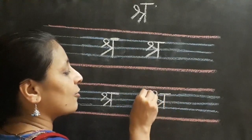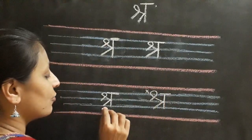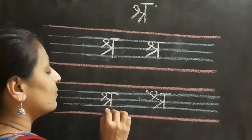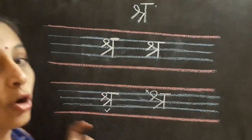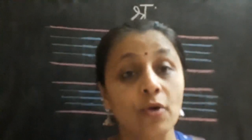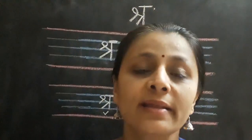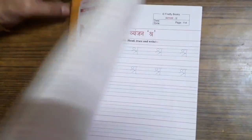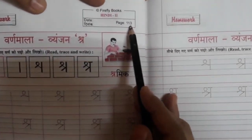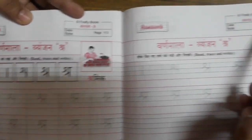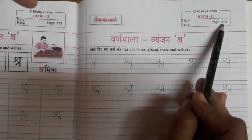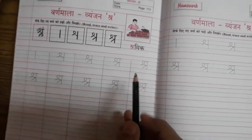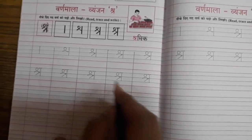This way we are going to write Vyanjanshra in three blue lines, like this. I hope you have understood Vyanjanshra. Now please open your Hindi My Skill Book. Here we have Hindi My Skill Book and we are going to open page number 113 and 114. And remember to write the date first. Shra se shramik - you can see in the picture. Now let's write Vyanjanshra in our notebook.